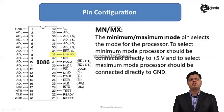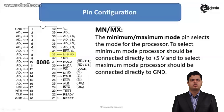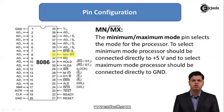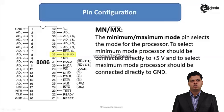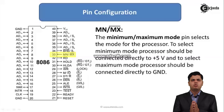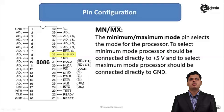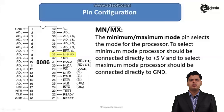The next pin is MN/MX bar — used for setting the mode of the 8086. As discussed in the features of 8086, it can work in two modes: minimum mode (single processor) and maximum mode (multiprocessor). This input pin selects whether the system is in single or multiprocessor mode. To select minimum mode, the pin is connected to +5V; to select maximum mode, it is connected to ground.